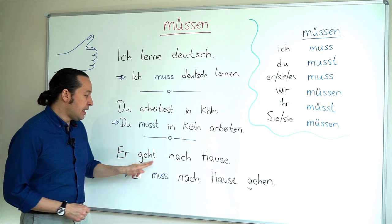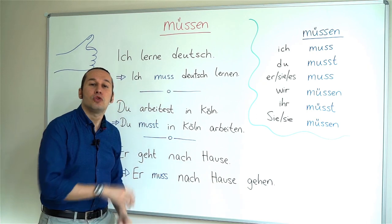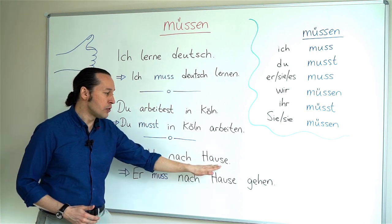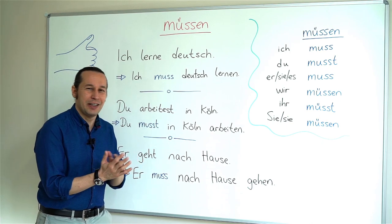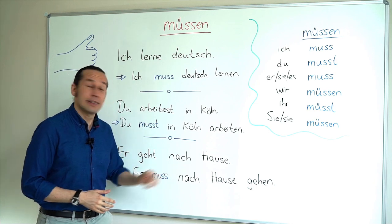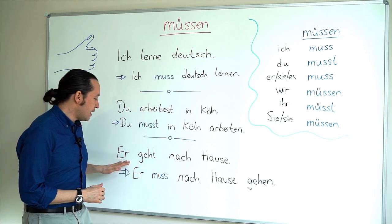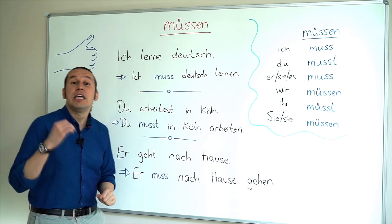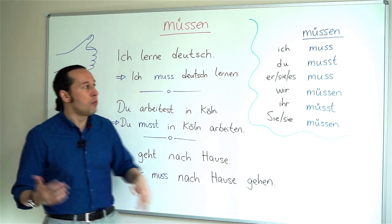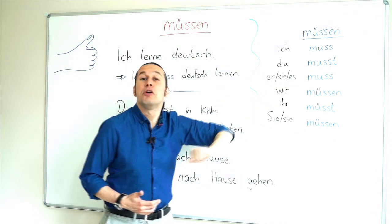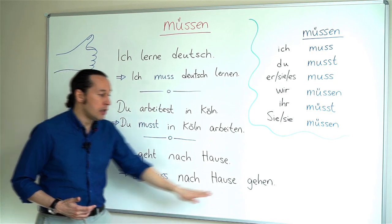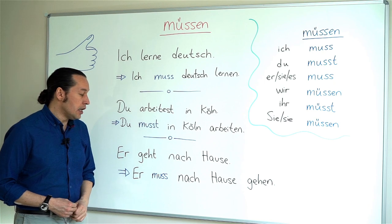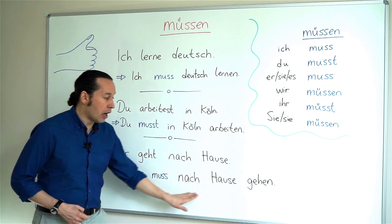Here we have er geht nach Hause. Gehen means 'to go.' Nach Hause means 'home' — nach means 'to' and Hause is 'home.' So 'he goes home' is er geht nach Hause. For 'he must go home,' I use er muss, and the infinitive form gehen goes to the end: er muss nach Hause gehen — 'he must go home.'